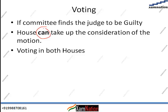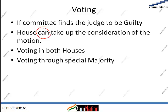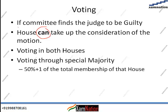Remember, introduction of the motion happens in one house — either Lok Sabha or Rajya Sabha. But voting happens in both houses, to decide whether the judge should be removed or not. The voting is done through a special majority. What does special majority mean? More than 50% of the total membership should vote yes for passing this motion.